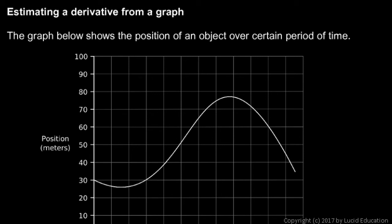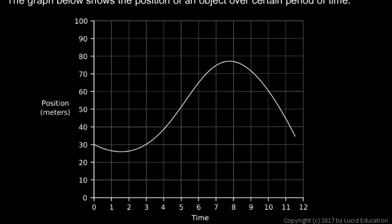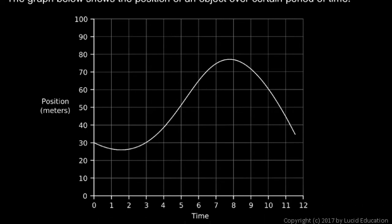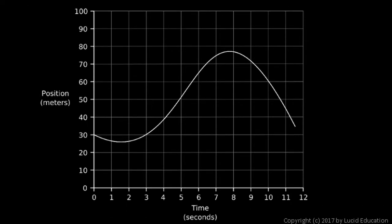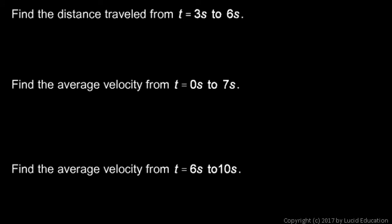We'll talk about estimating a derivative from a graph. If you're given a graph like this — a graph of position versus time — and we're not given an equation and not given any specific data points, just the picture of the graph, we can find the derivative or the slope at a particular point by using a tangent line.